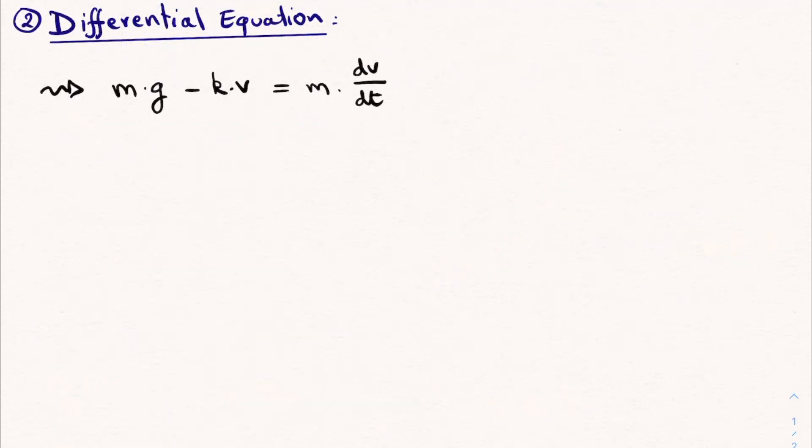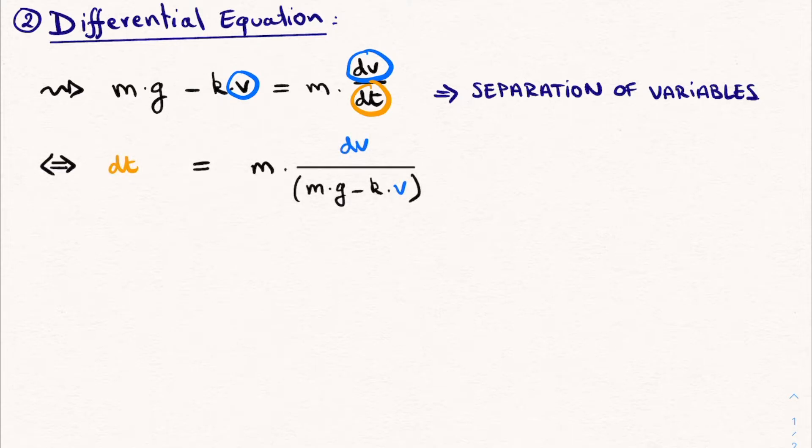When we write down this differential equation, we see that there are two variables that we're interested in. The variable pertaining to v, the velocity, which occurs in the term from the frictional force and in the numerator of this derivative. On the other hand, we have the variable t, which only occurs in the denominator of the derivative. Differential equations of this type we can solve by using separation of variables, which means that we separate each of these variables to one side of the equality sign.